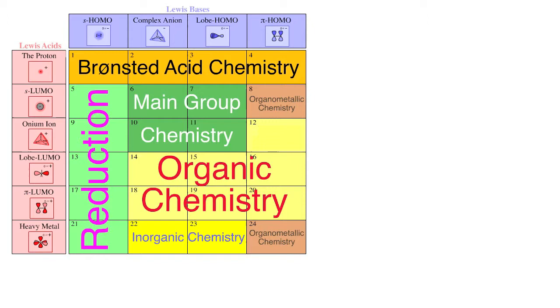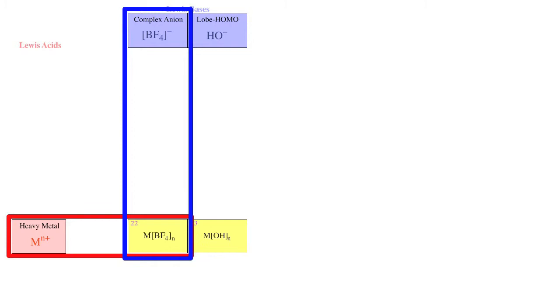Some classic inorganic chemistry: first, transition metal ions with complex anion Lewis bases. An example would be silver tetrafluoroborate. The very non-nucleophilic tetrafluoroborate ion allows the Ag+ ion to express its character.